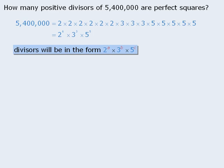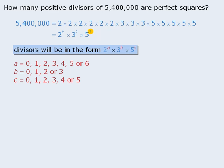Now since the prime factorization of 5.4 million has six 2s, a can be any number from 0 to 6. Since the prime factorization has three 3s, b can be any number from 0 to 3. And since the prime factorization has five 5s, c can be any number from 0 to 5.